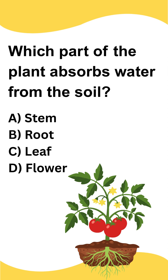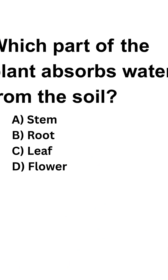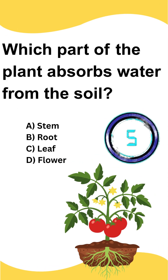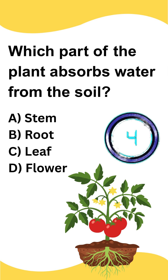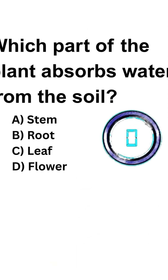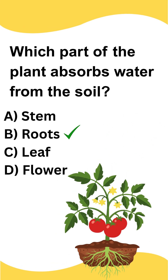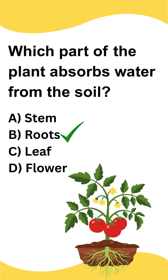Which part of the plant absorbs water from the soil? A) Stem, B) Root, C) Leaf, D) Flower. The correct answer is option B: Roots. We'll see you next time.